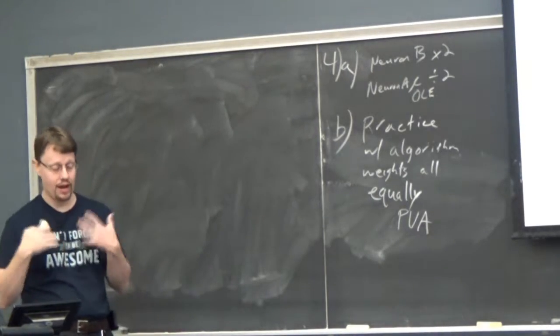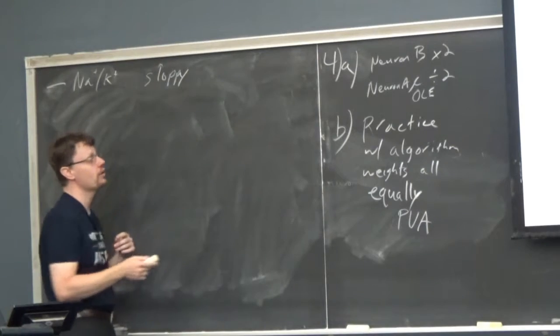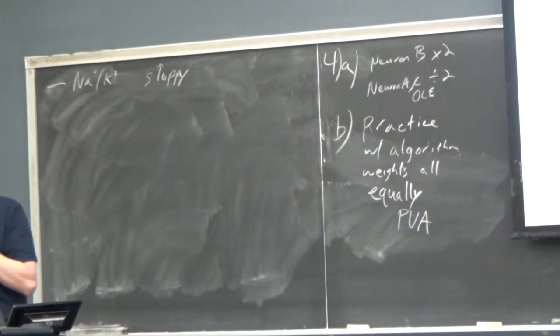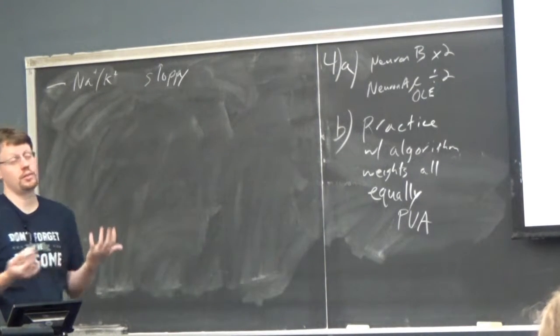In the first unit of the class we talked about how neurons fire action potentials, how they're electrically active. A neuron is not as reliable as a transistor. And people debate and wonder about whether that's a good thing or a bad thing.